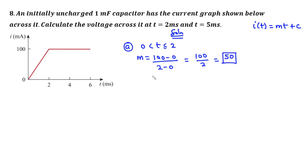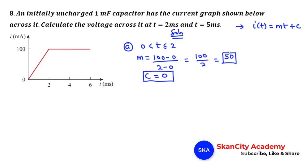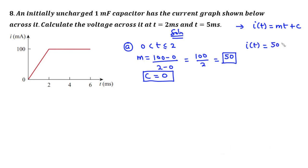To find the value of c, that is the point where the line crosses the y-axis, we have c equal to 0. Using this equation, the function giving us this straight line is i(t) = 50t, and the value of c is zero. This is in milliamps, and this is the expression that gives us the current for the straight line from zero to two.